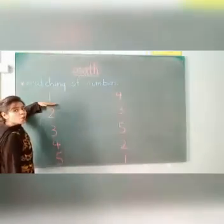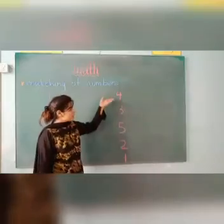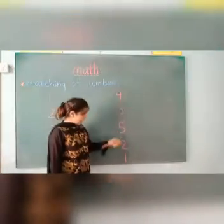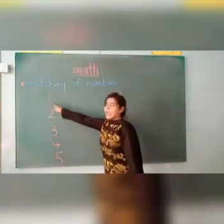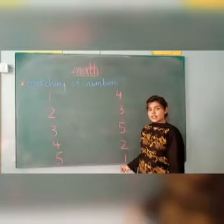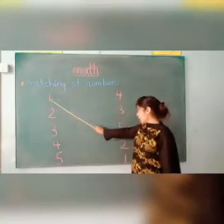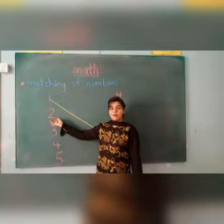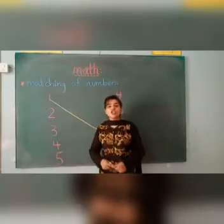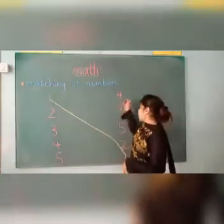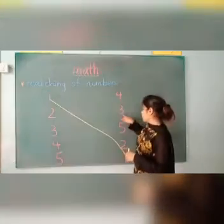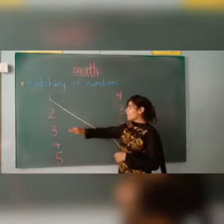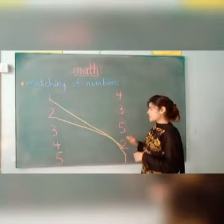Which number is this, kids? It is number 1. Now let's see where number 1 is over here. Is this number 1? No. Is this number 1? No. Is this number 1? Yes, they look the same — this is number 1! We are going to match number 1 with number 1. Well done! Now, which number is this? This is number 2. See where number 2 is and identify — here is number 2! We are going to match number 2. Well done, good job!